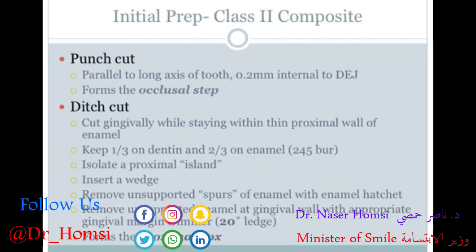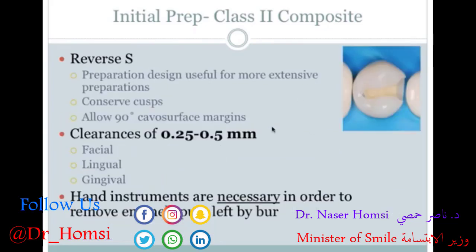The initial prep for class 2 composite is similar to class 1, but you extend the prep to one or both proximal sides of the tooth. The prep has the main body plus a new area called the proximal box, which is a little bit deeper than the rest of the prep design.